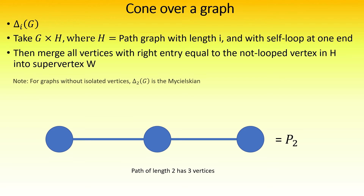For graphs without isolated vertices, the Michelsky construction is a special case of this operation, with i equal to 2.